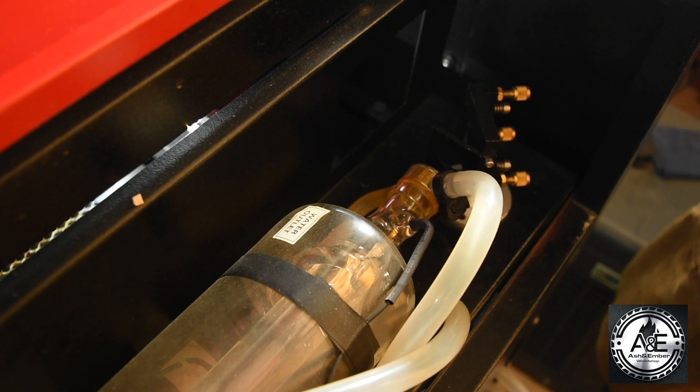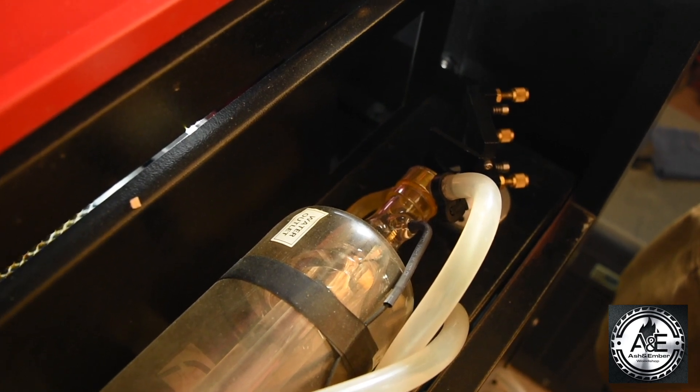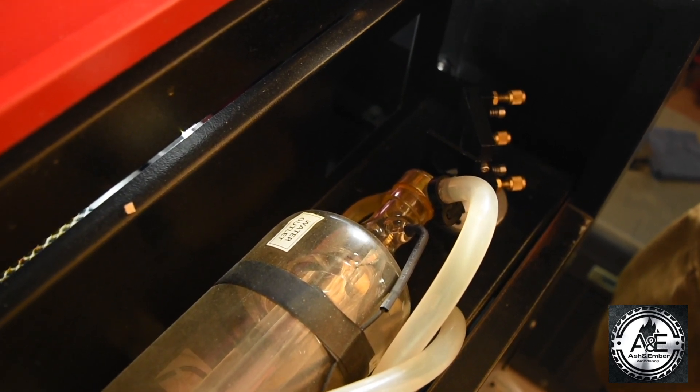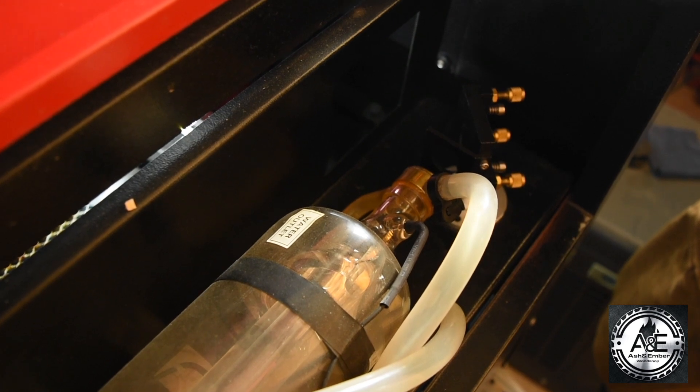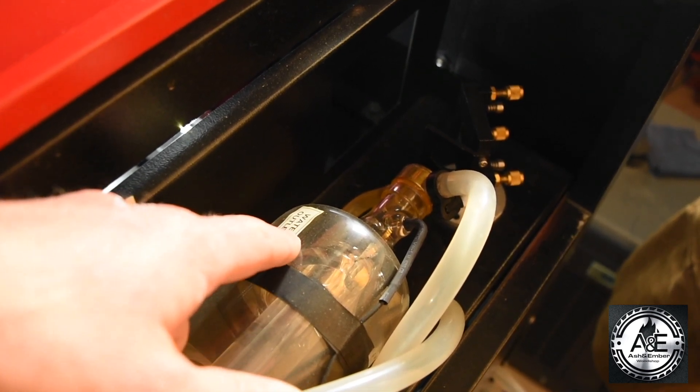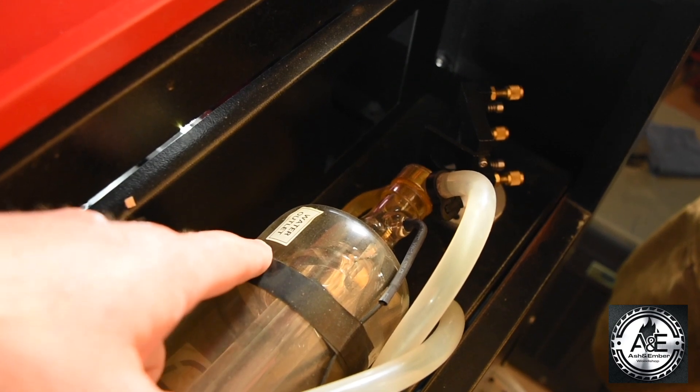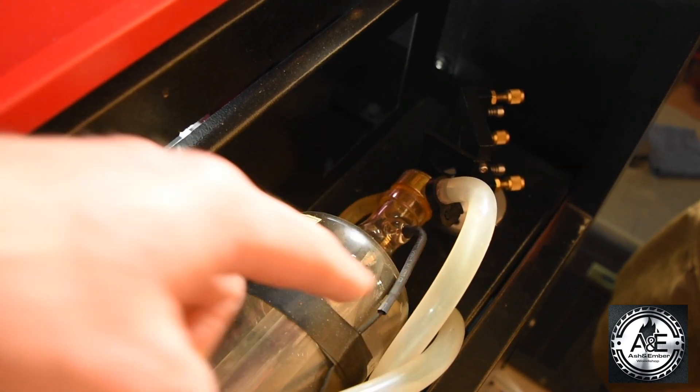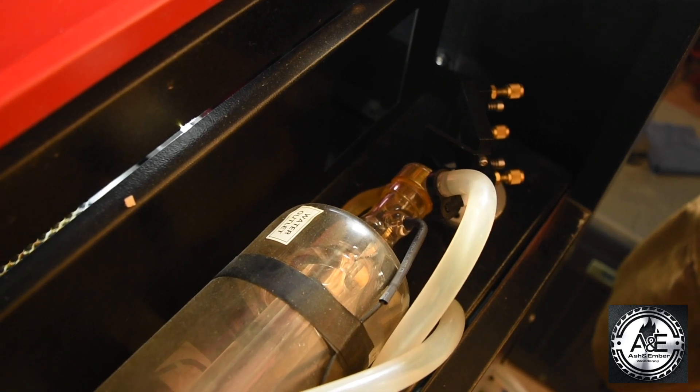Once you have your tube in place and your wires connected, then you're going to make sure that you have your water lines connected to the correct inlet and outlet. So here you'll see marked on the laser tube, it says water outlet. This will be your water outlet tube that goes into your chiller on the water outlet.